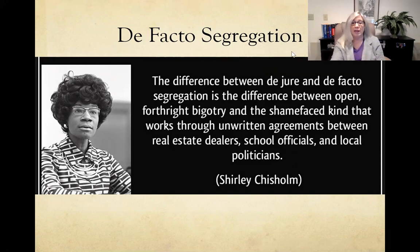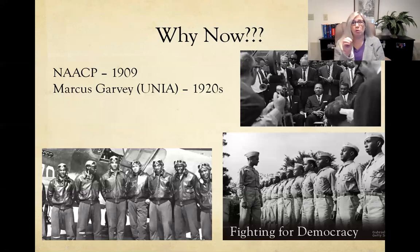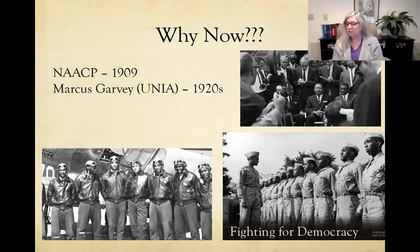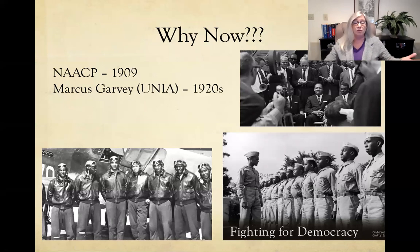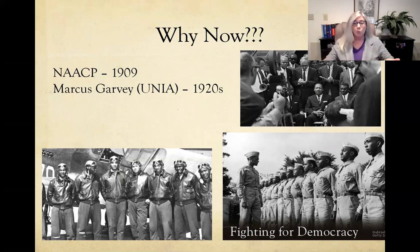Both types of segregation were heavily entrenched across the United States — de jure more in the South, de facto also in northern cities. Organizations working toward African-American rights started early: W.E.B. Du Bois and the Niagara Movement created the NAACP in 1909 during the Progressive Era. Then Marcus Garvey's Back to Africa movement in the 1920s argued that integration of the races would never fully be achieved, though he was eventually deported.